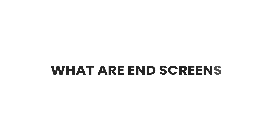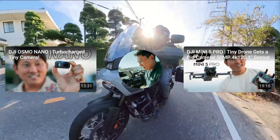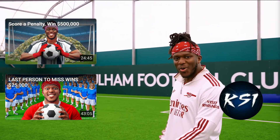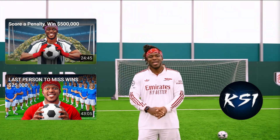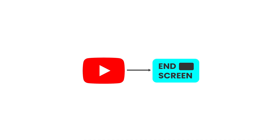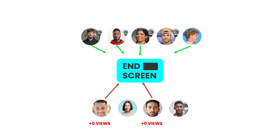So what are end screens? End screens are a feature that YouTube gives you — they're those little boxes that show up at the last five to twenty seconds of a video. You can use them to promote other videos or to get people to subscribe. YouTube built this feature for you to use, but here's the problem: most creators either don't use them at all, or they just throw them up without any strategy. When you actually use them the right way, they send thousands of extra views to your videos.